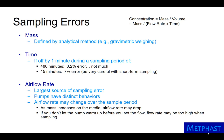The airflow rate is often the largest source of sampling error. Air sampling pumps have distinct behavior that one needs to become familiar with. Also, airflow rate may change over the sampling period. As mass on the collection media increases, airflow rate may drop.